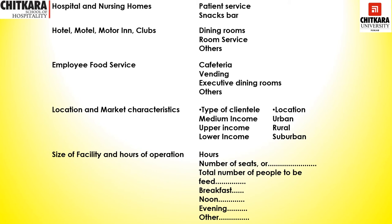Location and market characteristics address who the clientele will be and their income level — medium, upper, or lower — and whether the location is rural, urban, or suburban. The next point covers size of facility: the number of seats or covers to be laid out, how many people need to be served at a particular time, and the volume for each meal period — breakfast, lunch, dinner, supper, or evening snacks.